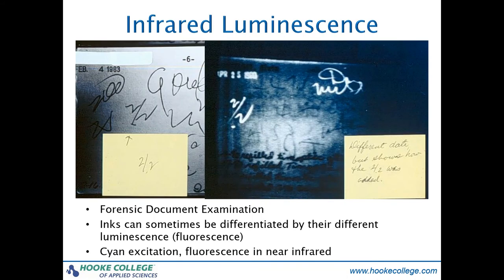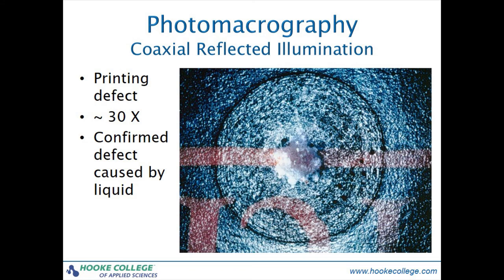Another somewhat exotic application comes from the field of forensic document examination. This project illustrates the value of infrared luminescence to detect alterations in a document. A less exotic example from the industrial quality control world is this use of coaxial reflected illumination to document a printing defect. This image confirms that the source of the defect was a droplet, probably water, that led to a series of events resulting in the swelling and bursting through the ink layer. Coaxial illumination provides excellent information regarding surface irregularities.